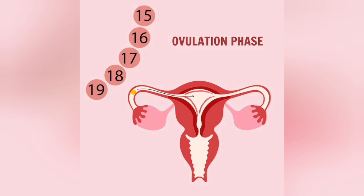The ovulatory phase occurs around day 14 in a 28-day menstruation cycle. A sudden surge triggers the release of an egg from the ovary, and ovulation occurs.